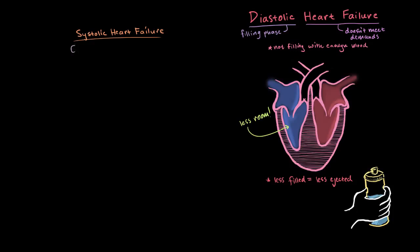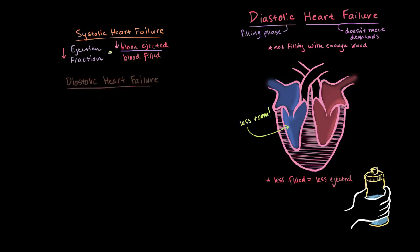Remember how systolic heart failure had a lower ejection fraction — that fraction of blood ejected with each beat. That's because there's about the same amount, or possibly even more, filled into the ventricles with systolic failure, but less is ejected, so naturally you'd have a lower ejection fraction. But since diastolic heart failure has both the filled amount and ejected amount lower — both are lower — sometimes your ejection fraction can be the same as with a healthy heart.